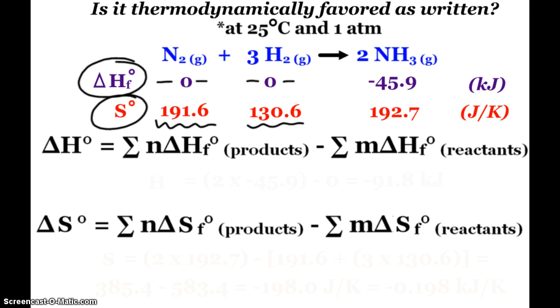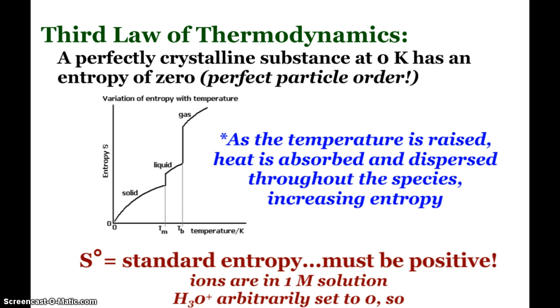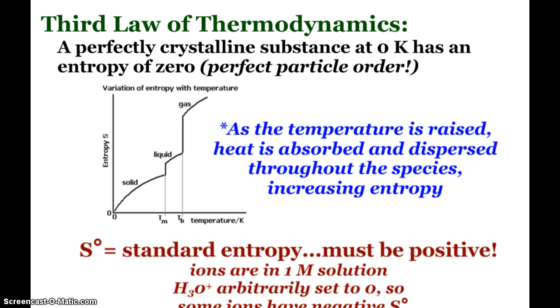Nitrogen and hydrogen gases have entropy. And so that leads us into our third law of thermodynamics, the fact that a perfectly crystalline substance at zero Kelvin is what we set and say has an entropy of zero. That would be the perfect particle order. And so as you slowly heat up a substance, the heat is absorbed and dispersed throughout it. And so entropy slowly, steadily increases.